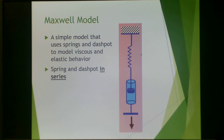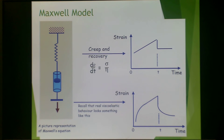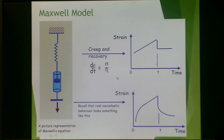The Maxwell model uses springs and dashpots in series to model viscoelastic behavior — typically a spring followed by a dashpot with a downward displacement. When a stress is applied, you get a viscous deformation followed by this particular behavior. This is what real viscoelastic behavior looks like, and the Maxwell model can approximate it, getting us closer to viscoelastic behavior than a purely elastic or purely viscous response.